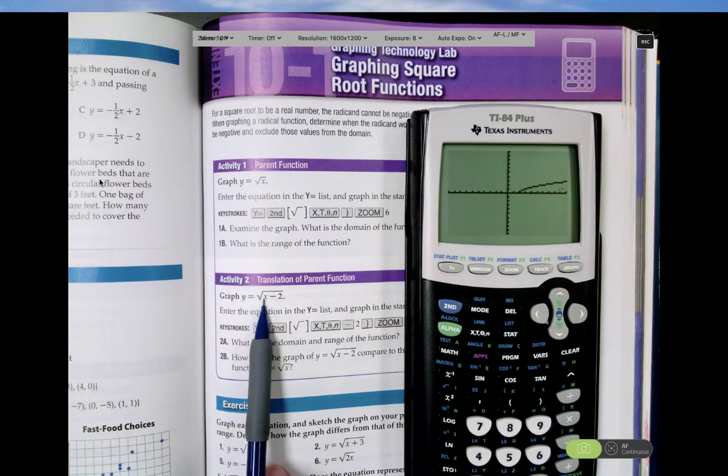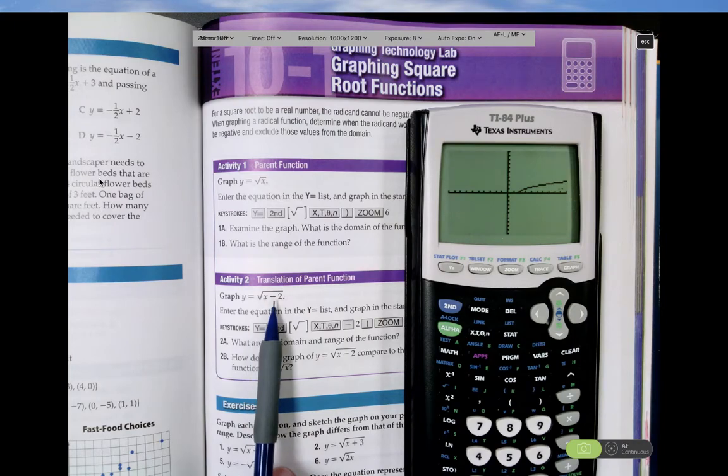If I put in 0 for x, would that work? No, because 0 minus 2 is negative 2. You can't take the square root of negative 2. It's not a real number.